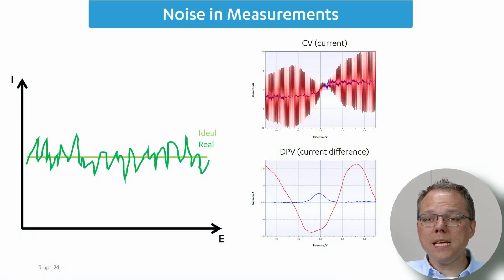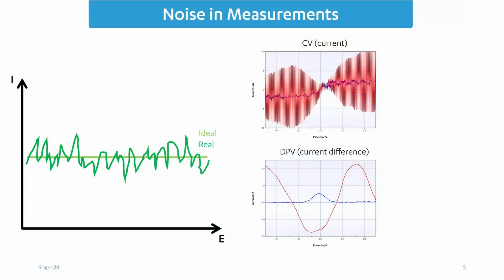Another type of measurement where noise can actually look quite different are DPVs and square waves. Because these are differential measurements you don't see directly the current but you actually see the difference of currents including the noise on these currents. So if you have a lot of noise the differentials can actually look like there's an extra peak as you can see in the graph on the bottom.